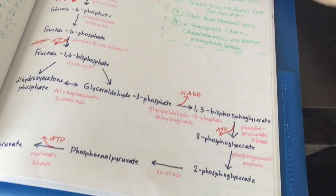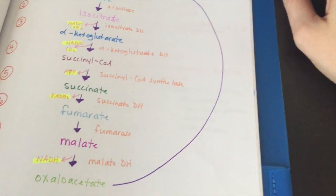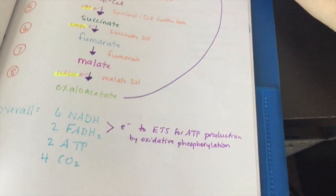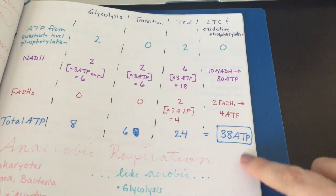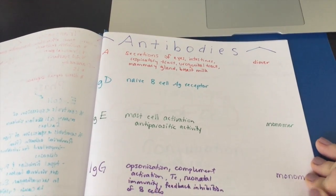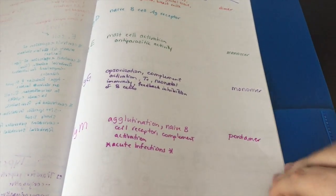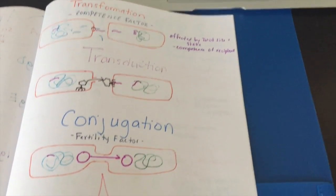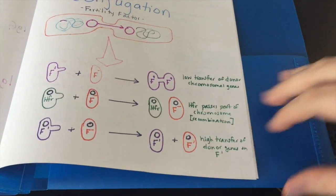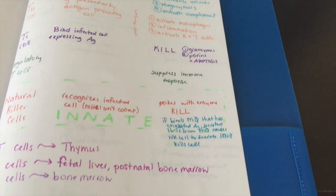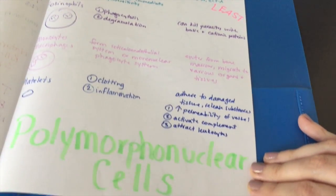Anytime I get to a topic where I really need a visual, I draw it out. Here I drew the glycolysis steps and the citric acid cycle steps, highlighting where ATP and NADH are produced and the end products. I also made a table of how many ATPs are produced at each step. Then here are the antibodies, what they do, and what structure they come in — just a summary table to help narrow my studying. I also drew out the different ways that gene transfer can happen in bacteria to help me visualize the process, and the different methods of conjugation. Finally, I made a table of all the lymphocytes and white blood cells and what they do.